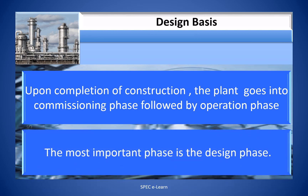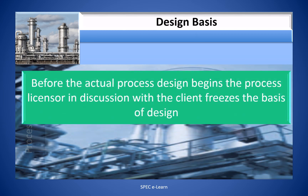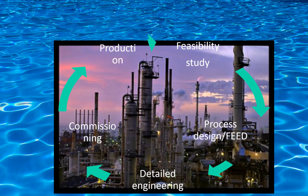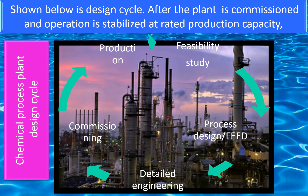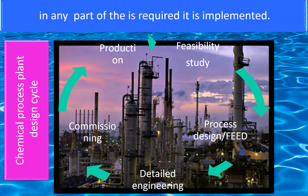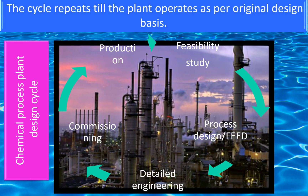The most important phase is the design phase. Before the actual process design begins, the process licensor, in discussion with the client, freezes the basis of design. This is an important document that sets the design process rolling. As shown below is the design cycle. After the plant is commissioned and operation is stabilized at rated production capacity, any design discrepancy against the design basis is analyzed, and if modification in any part of the plant is required, it is implemented. The cycle repeats till the plant operates as per the original design basis.